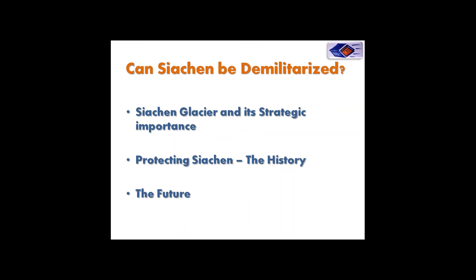Siachen is important not just strategically but also geographically, for both India and Pakistan. Two rivers originate from the Siachen Glacier: the Nubra River and the Shyok River. The Shyok River joins the Indus River, which travels 3,000 kilometers to meet the Arabian Sea in Pakistan, feeding millions of people in both Pakistan and India. This makes Siachen geographically vital for both countries.